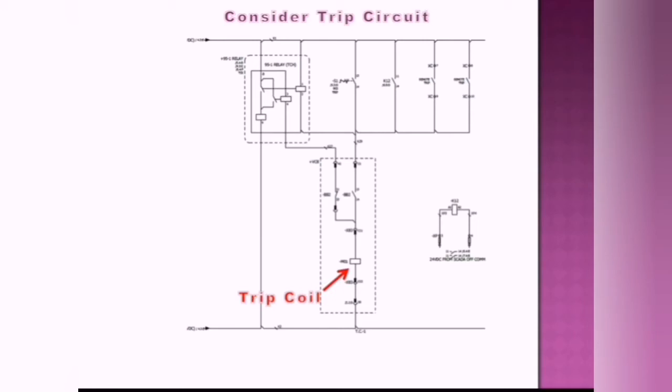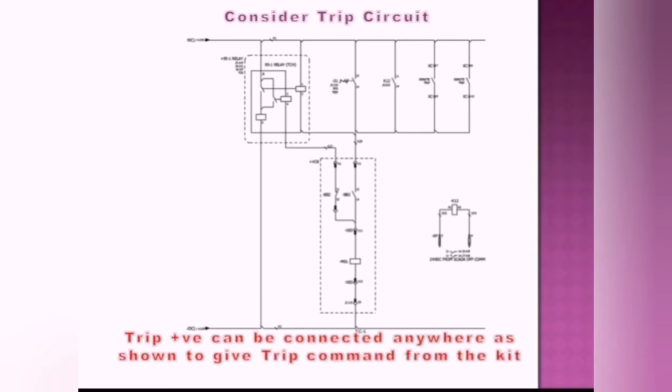Let's consider the trip circuit. M0 is the trip coil. Trip positive can be connected anywhere as shown to give trip command from the kit.